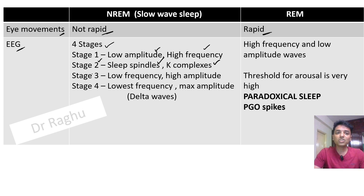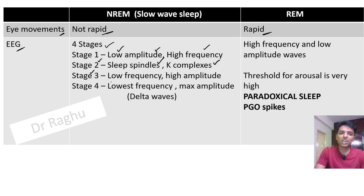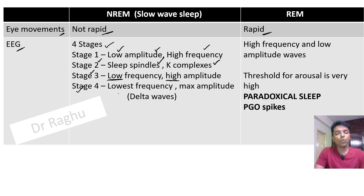When we enter into stage 3 of sleep, the low amplitude and high frequency waves seen in stage 1 change to low frequency and high amplitude waves. In stage 4, the deeper stage of sleep, the frequency becomes the lowest and the amplitude becomes maximum. These are called delta waves.